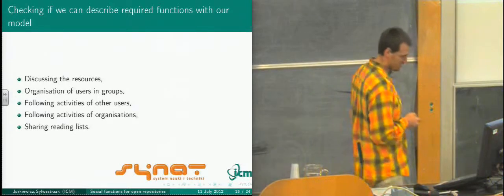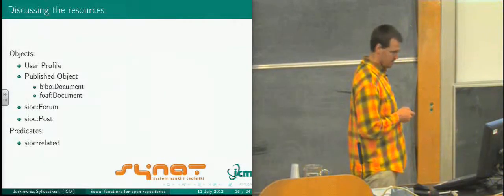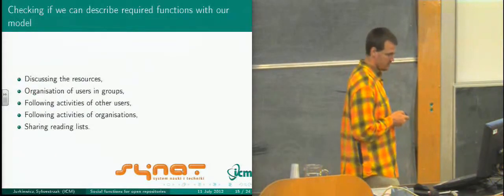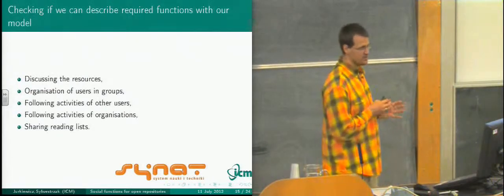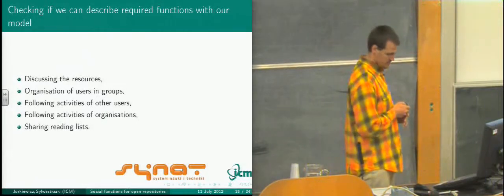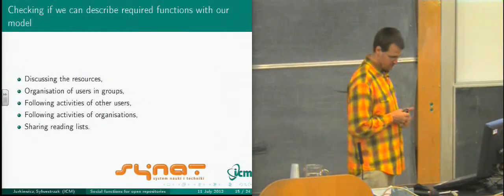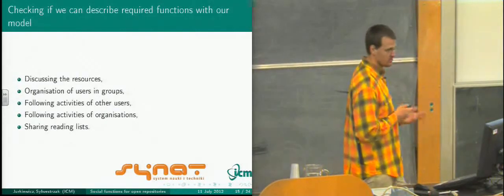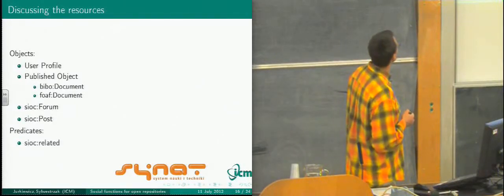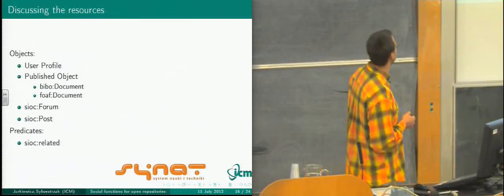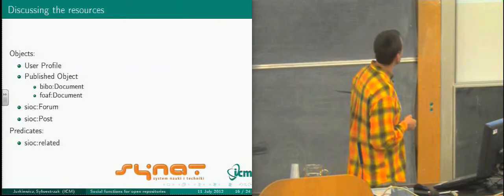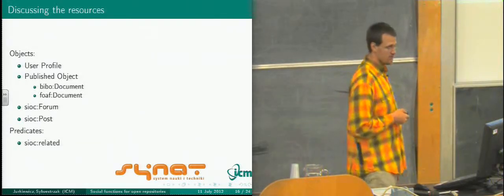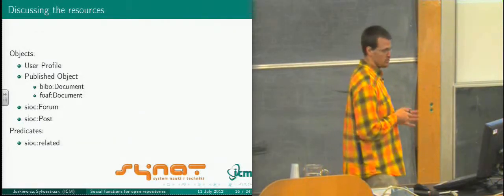Now let's check completeness. We have these five required social functions. Let's check if our system model is enough for modeling these functions. For discussing resources: we have user profile, published objects, forum, and posts along with a bunch of predicates, so we can discuss resources. For organizing users into groups: I showed you the groups object, and we can show there's a predicate 'member of.'